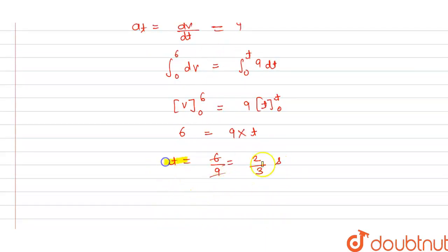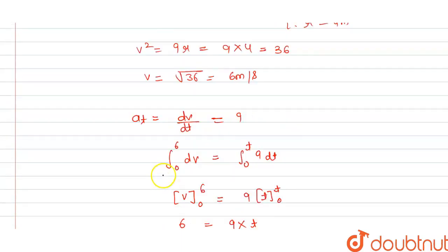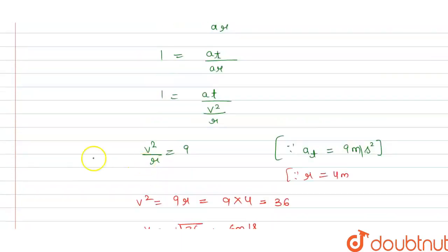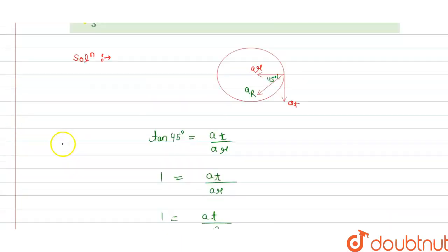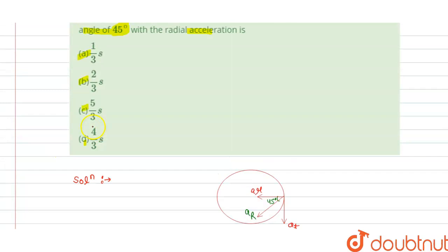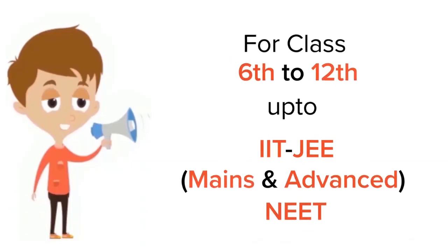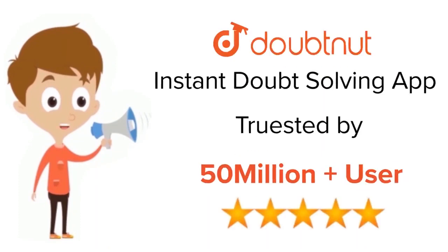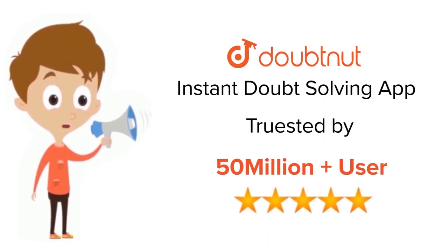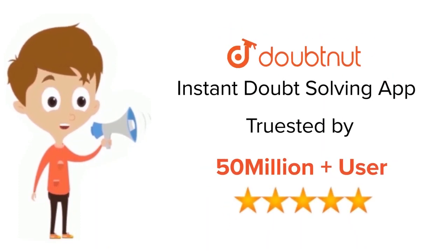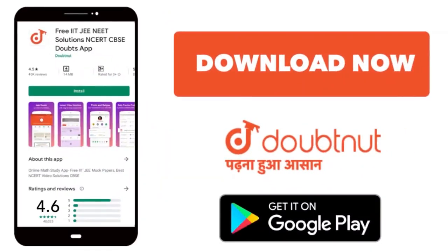So the answer is t = 2/3 seconds, which means option B is correct. Thank you. For class 6 to 12, IIT JEE, and NEET level — trusted by more than 5 crore students — download the DoubtNet app.